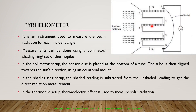In the thermopile setup, the thermoelectric effect is used to measure solar radiation. Bismuth and antimony are used as the two elements in an alternate arrangement. Bismuth creates a voltage V1 and antimony creates a voltage V2 across their junctions.